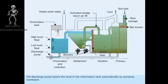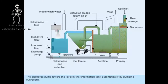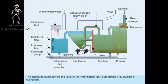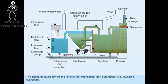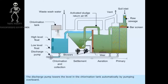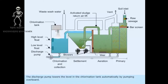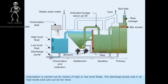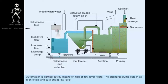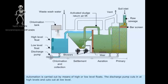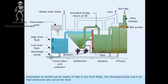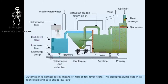The discharge pump lowers the level in the chlorination tank automatically by pumping overboard. Automation is carried out by means of high or low level floats. The discharge pump cuts in at high level and cuts out at low level.